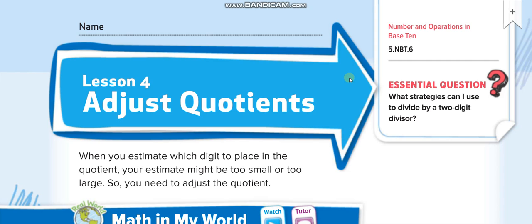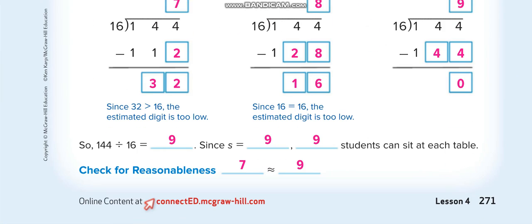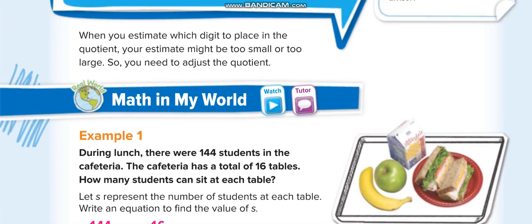Hey everyone, welcome back to my channel Learn Math with Mr. Saad. Today's lesson is for Grade 5, Chapter 4, Lesson 4: Adjust Quotients, page number 271. Adjusting quotients is just like the last lesson, but we'll keep trying different numbers.